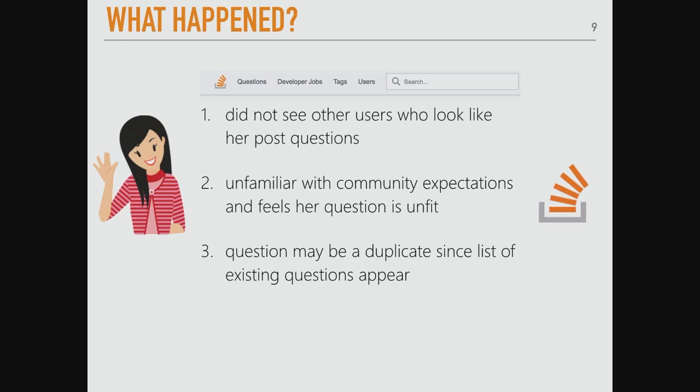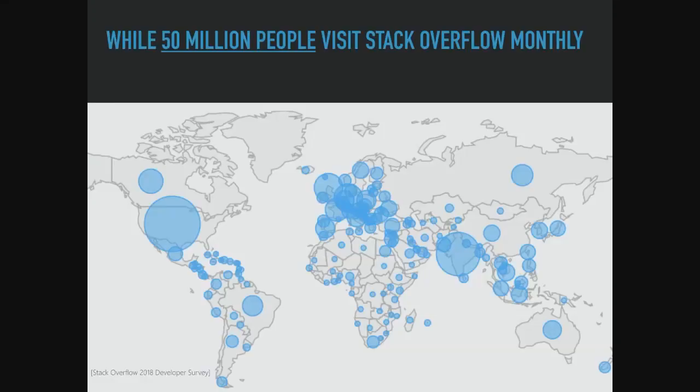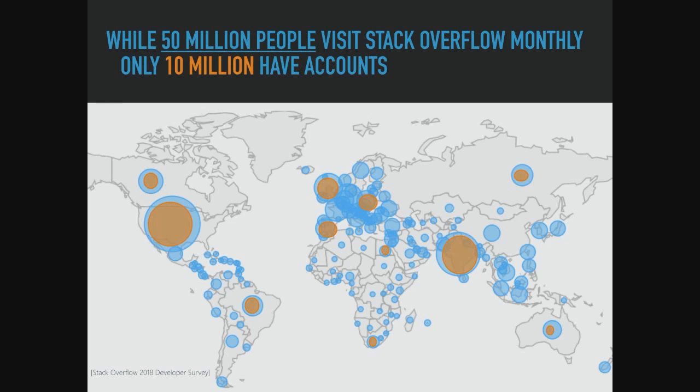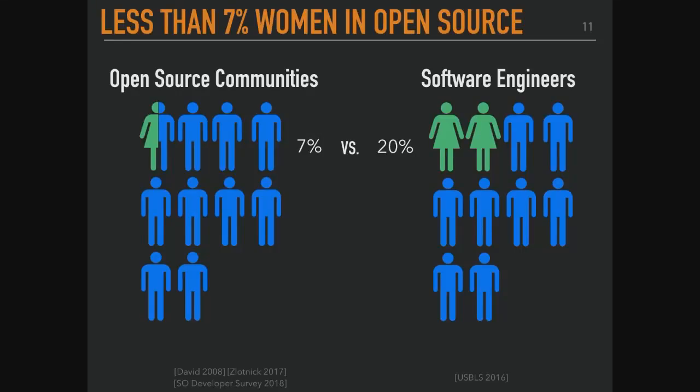In order to get a bigger understanding of this, I wanted to ground it in who's using Stack Overflow. Stack Overflow has about 50 million visits per month, according to their developer survey. Of that amount, about 10 million people have accounts — a small percentage who are actually engaged. Also, less than 7% of women are contributing in open source, including Stack Overflow and GitHub. This is really low in comparison to the number of women who are developers in industry or students in computer science courses.